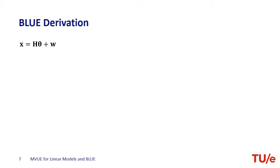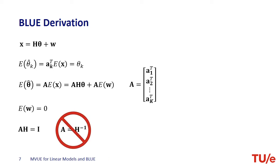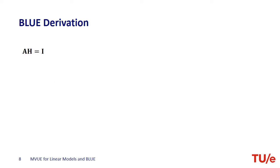Let's adopt a linear signal model that consists of an observation matrix H and the parameter vector theta. The data is generated by this signal model plus some noise. We have to go back to the unbiased condition. We can rewrite this expression for the parameter vector theta, which already reveals a couple of things. First, the noise has to be zero mean to avoid any bias. Second, we definitely need the product of the coefficients of the estimator collected in matrix A and the observation matrix H to be equal to the identity matrix. You may be tempted to think the solution is that coefficient matrix A has to be the inverse of the observation matrix — well, it doesn't work that way.